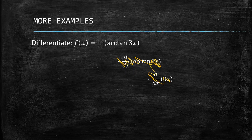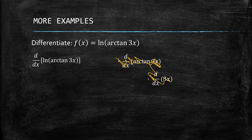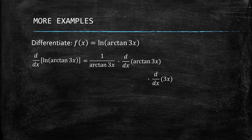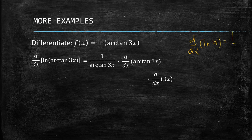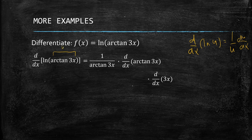Let's look at our next given: the derivative of ln(arctan(3x)). Since it's ln, the derivative of ln is just 1 over u times du/dx. Our u is arctan(3x), so we have 1 over arctan(3x), and we do not forget to get the derivative of whatever is inside the parentheses.